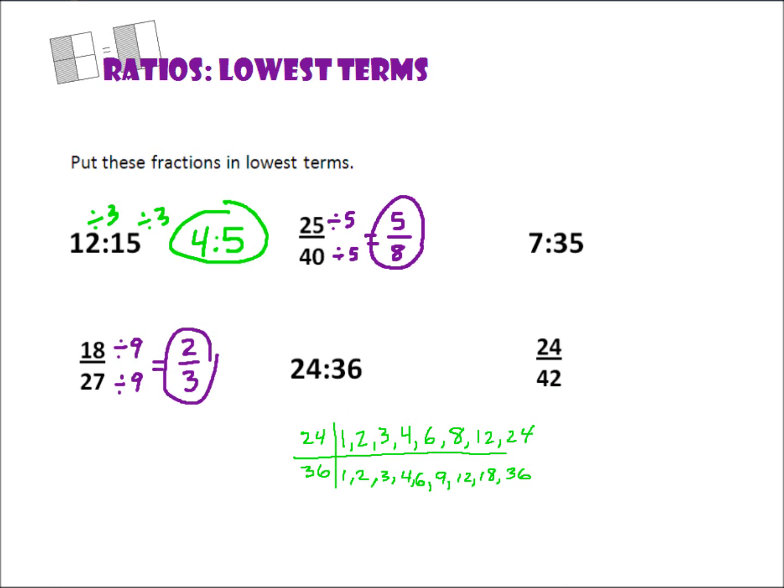And now, we can look for our greatest common factor. So, we can see that 1's there, 2's there, 3 is there, 4 is there, 6 is there. 8 and 9 don't match up, but 12 does. 18, 24, and 36 don't find pairs. So, then 12 would be our greatest common factor.